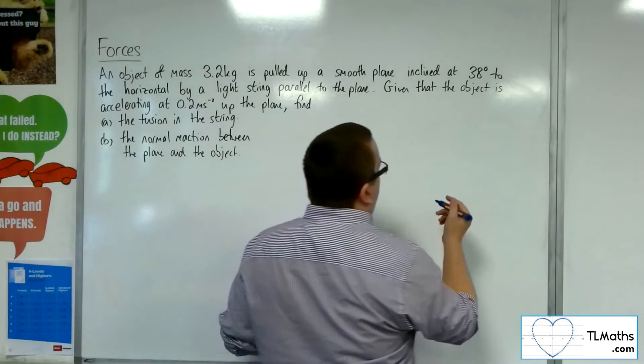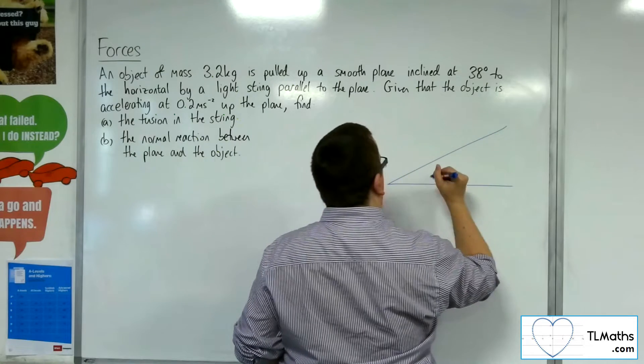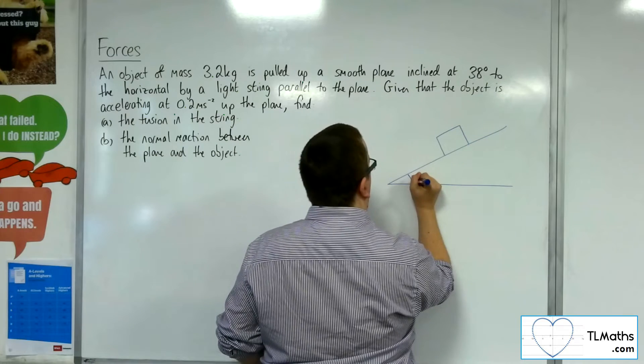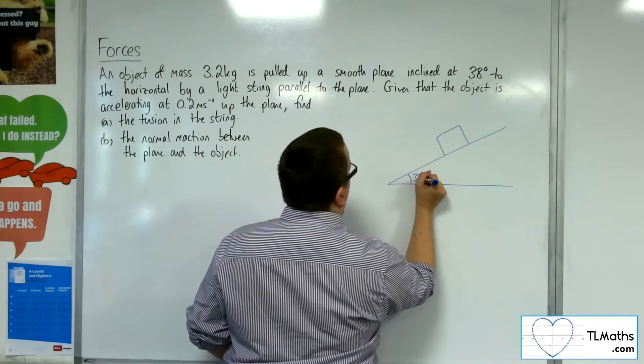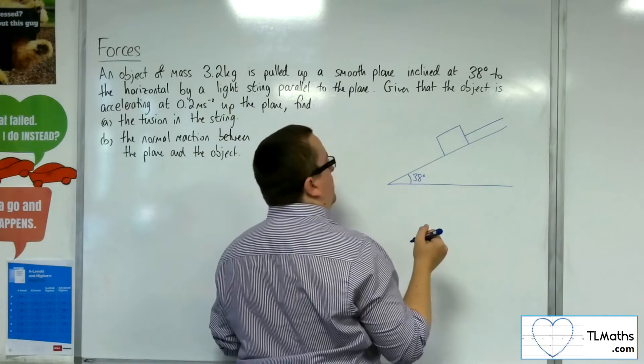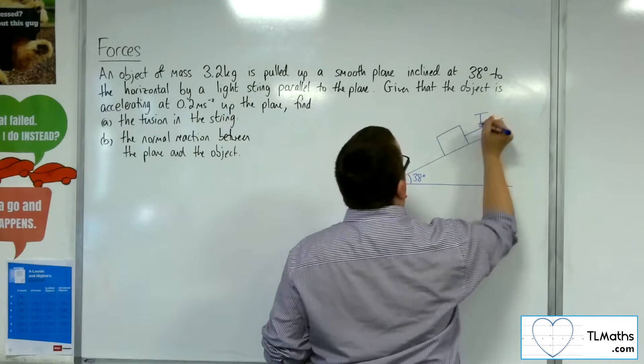Let's draw a diagram so we can see what's going on. So here's my inclined plane. Here is the object on the plane. This angle is 38 degrees. We've got this string that is pulling the block up the slope. There will be tension in that string.